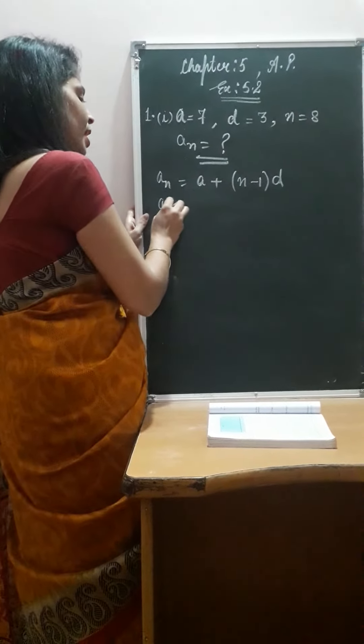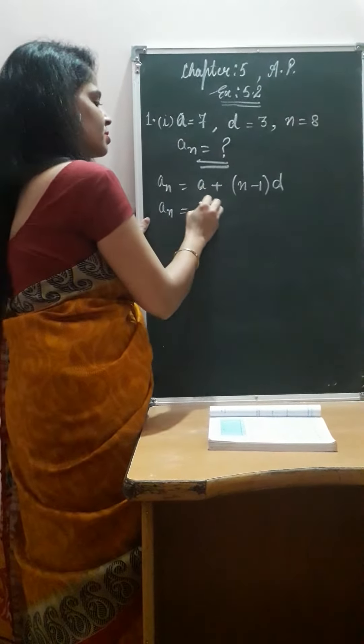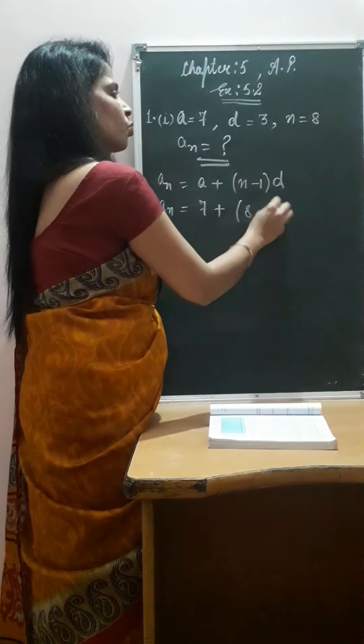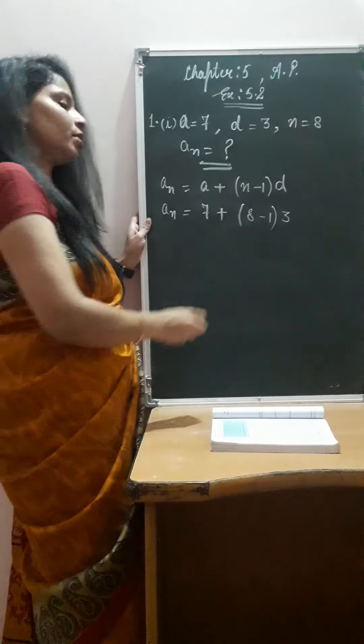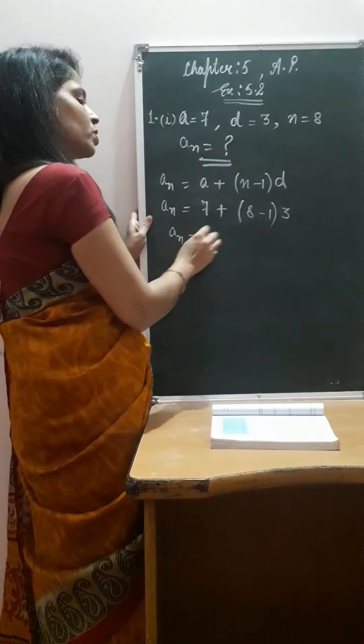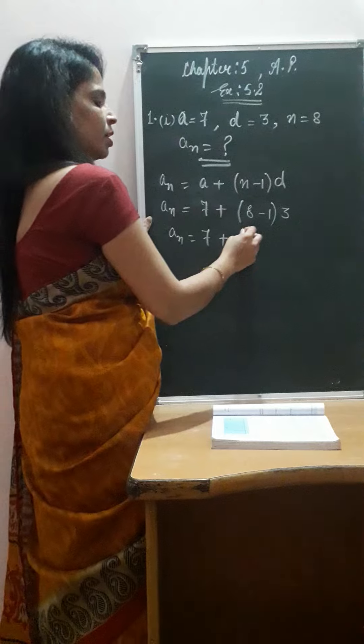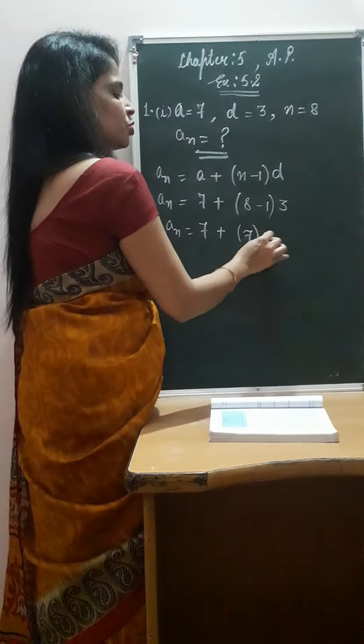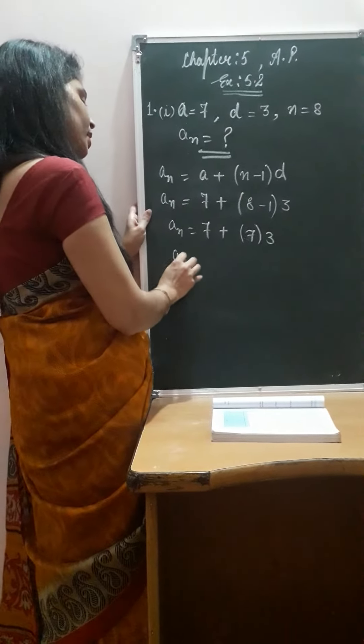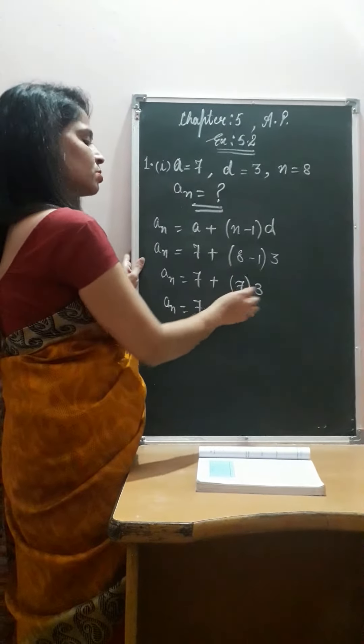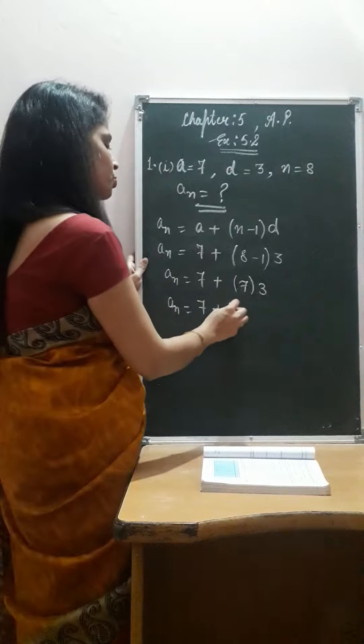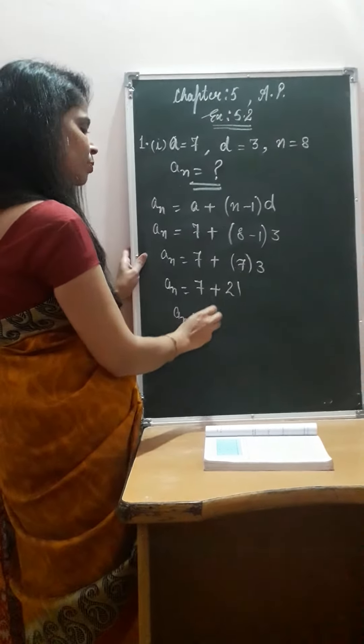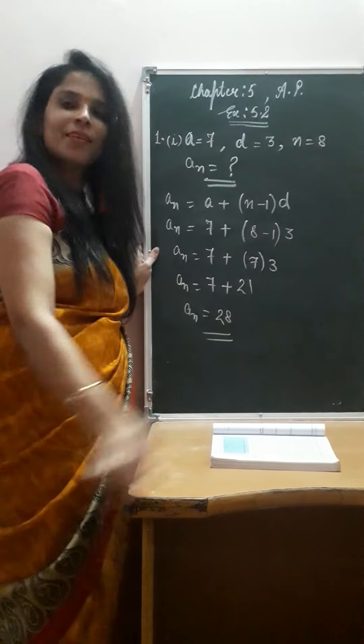So AN will remain as it is. AN is equal to 7 plus, here we have 8 minus 1, into 3. So AN becomes 7 plus 7 into 3. 7 plus 21 is equal to... So the Nth term of the given series will be 28. Right?